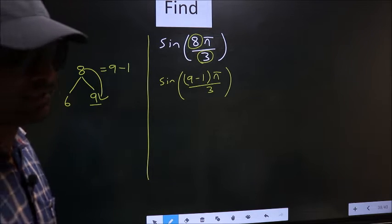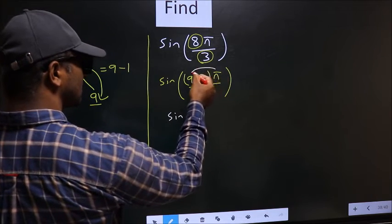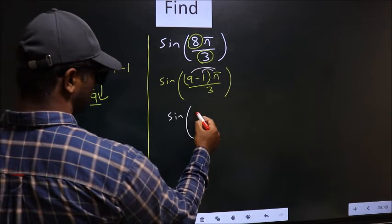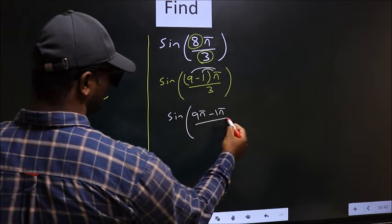Next, now you should open up the brackets. So you get 9π minus 1π by 3.